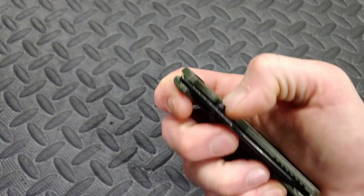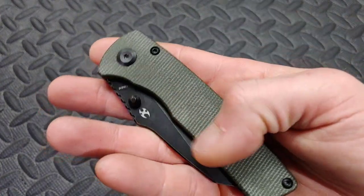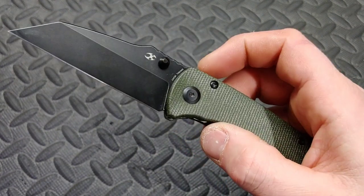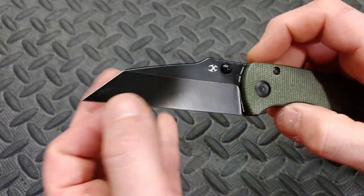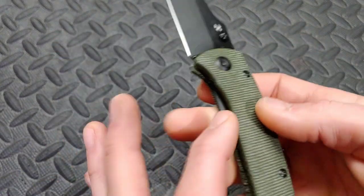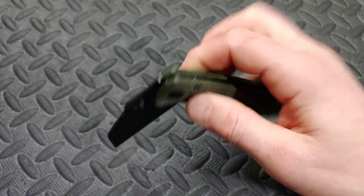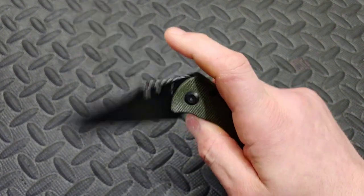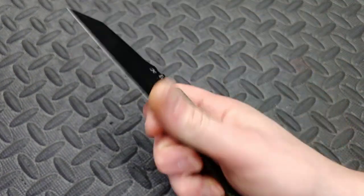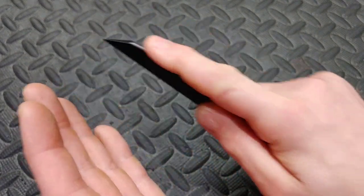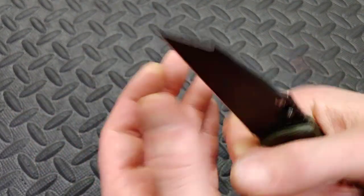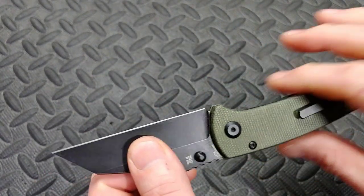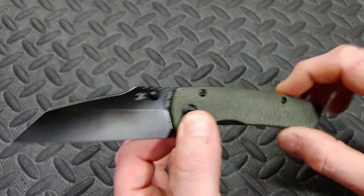Next. The Concept Main Street. Micarta handles. Nice easily accessible thumb studs. 154CM blacked-out blade. The access to the lock bar is really easy. Very smooth. You've got a lot of leverage behind those thumb studs. Great working knife. Nice acute tip for utility cuts. Nice straight edge. You've got a lot of leverage into your cuts because this is such neutral grips. So with the neutral grips and that nice straight edge, it's kind of like a utility blade on steroids. It's a great working blade.